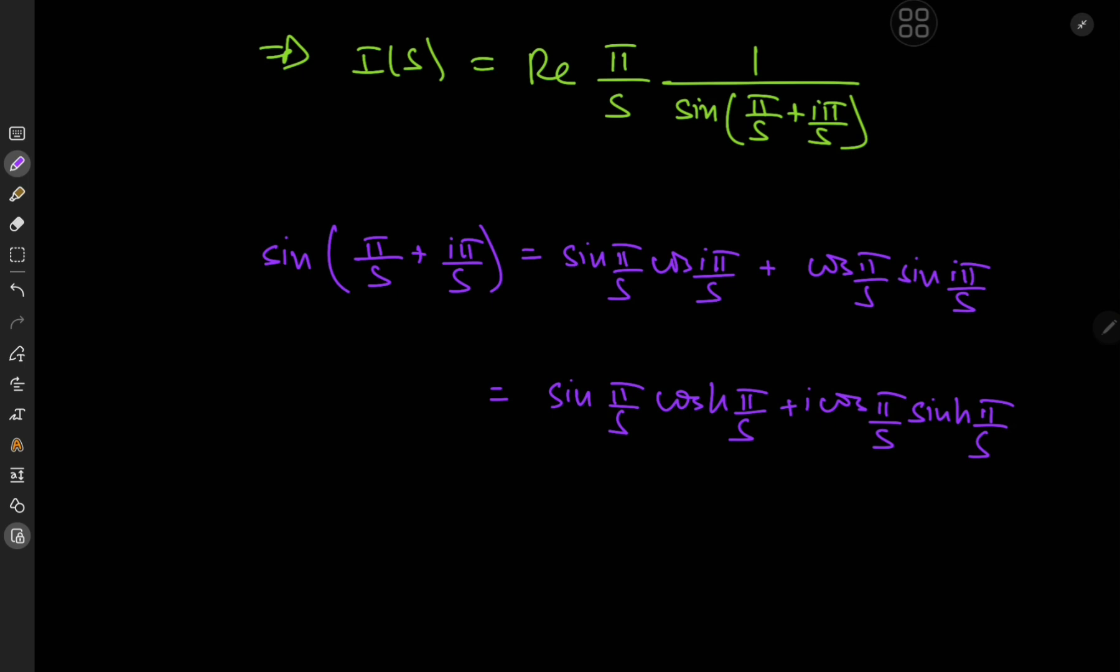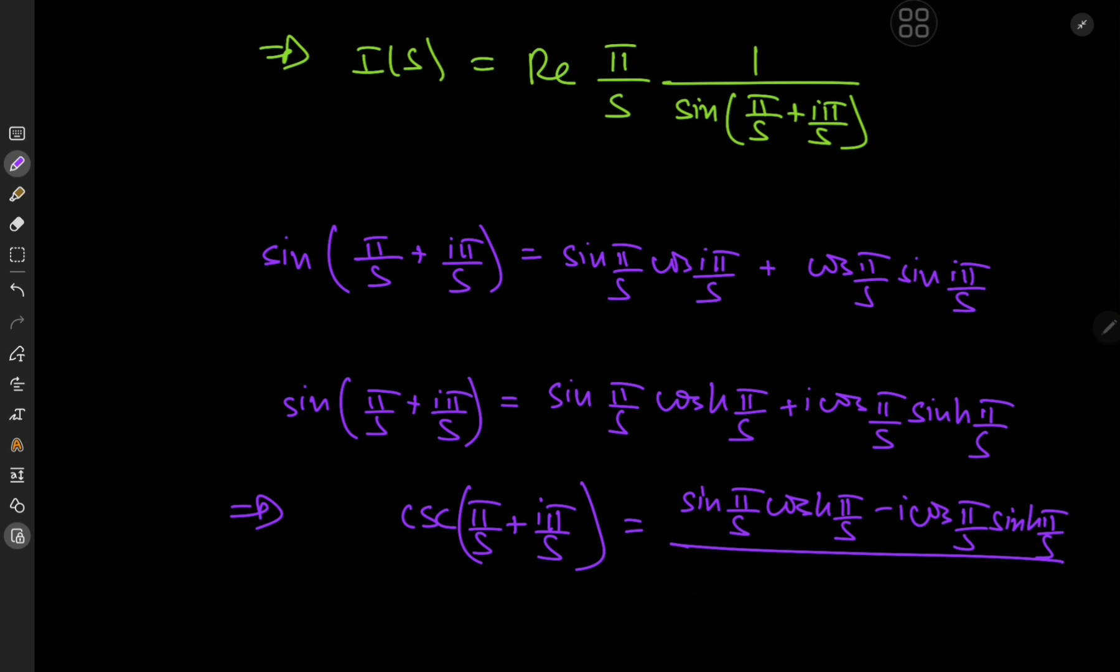Okay, cool. But wait, if we reciprocate this, then we should expand using the complex conjugate. So this implies that the cosecant of pi by s plus i times pi by s equals sine pi by s times cosh pi by s minus i times cosine pi by s times the sinh of pi by s divided by sine square pi by s times cosh square pi by s plus cosine square pi by s times the sinh square of pi by s.